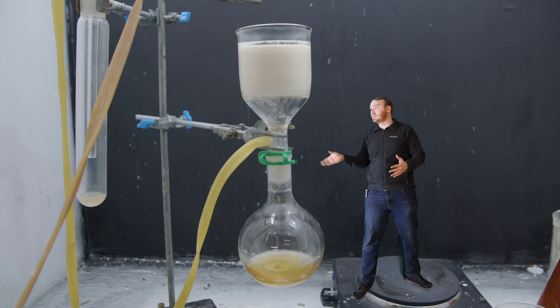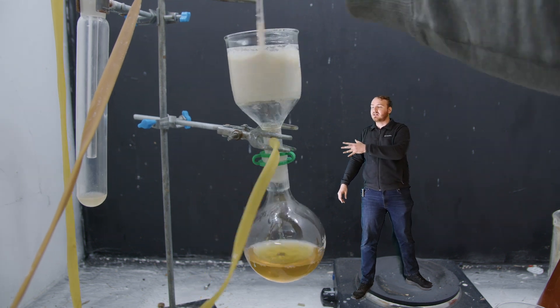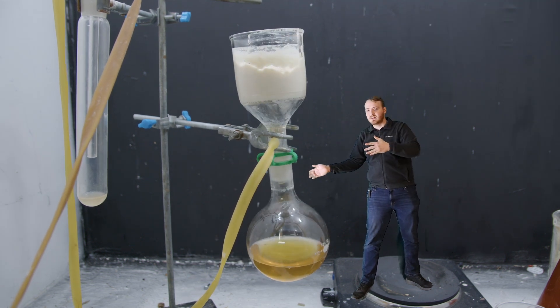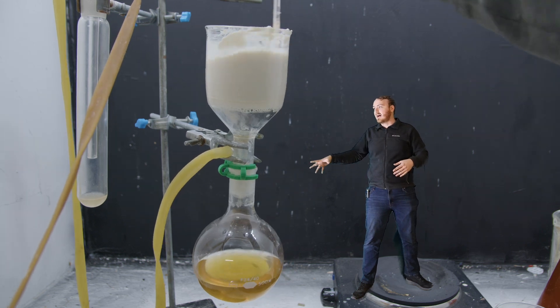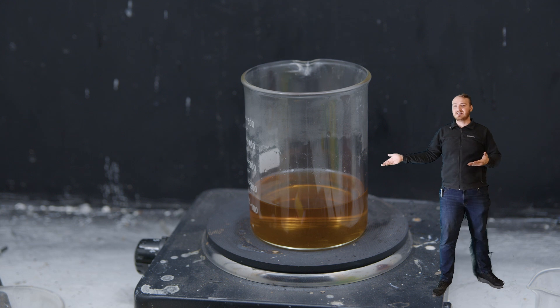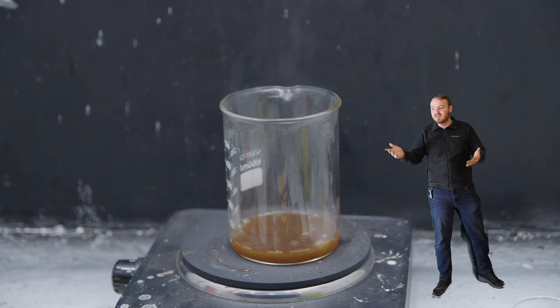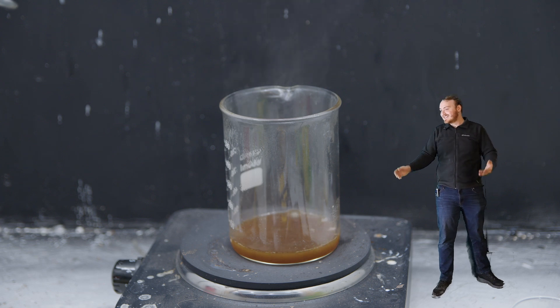Once we think the reaction is good and done, we can filter off the solid calcium sulfate and it'll get stuck in the filter. And then all of the citric acid pours down in the water because it's all dissolved. So now what we have is just pure citric acid and water. So if we just boil off the water, then we'll be left with pure citric acid.